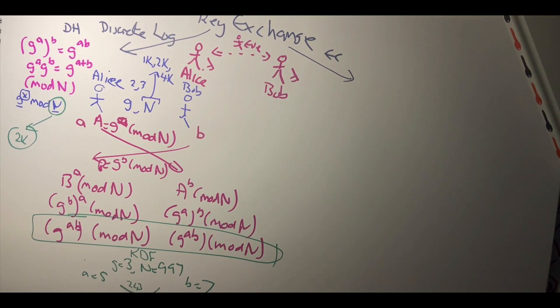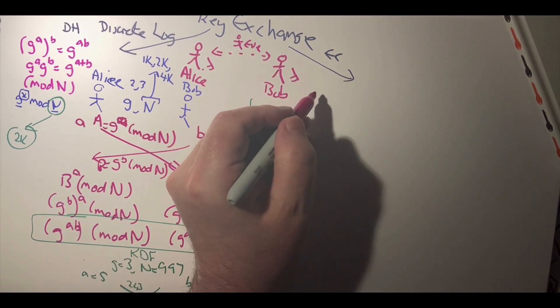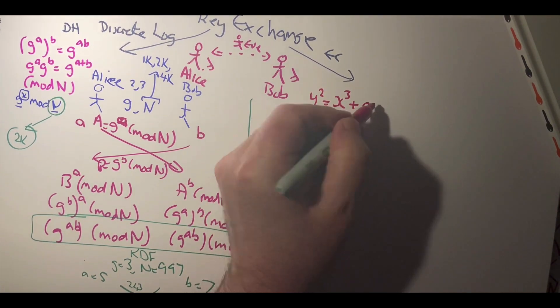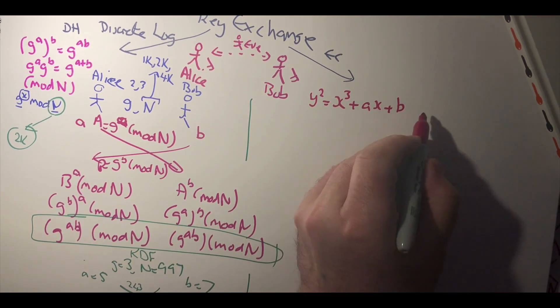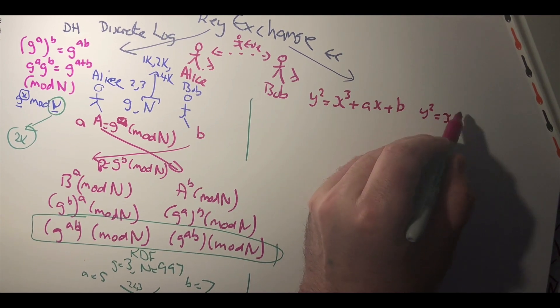The other method that we use is elliptic curve method. So with elliptic curve method we might have an elliptic curve. It could have this type of form. One example of this is y squared equals x cubed plus 7.